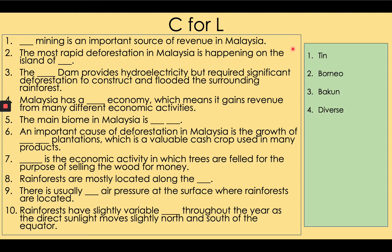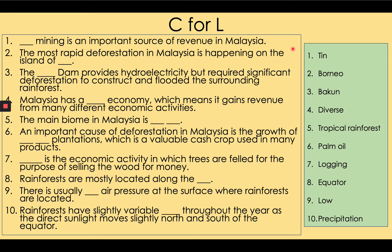5. The main biome in Malaysia is tropical rainforest. 6. An important cause of deforestation in Malaysia is the growth of palm oil plantations, which is a valuable cash crop used in many products. 7. Logging is the economic activity in which trees are felled for the purpose of selling the wood for money. 8. Rainforests are mostly located along the equator. 9. There is usually low air pressure at the surface where rainforests are located. 10. Rainforests have slightly variable precipitation throughout the year, as the direct sunlight moves slightly north and south of the equator.